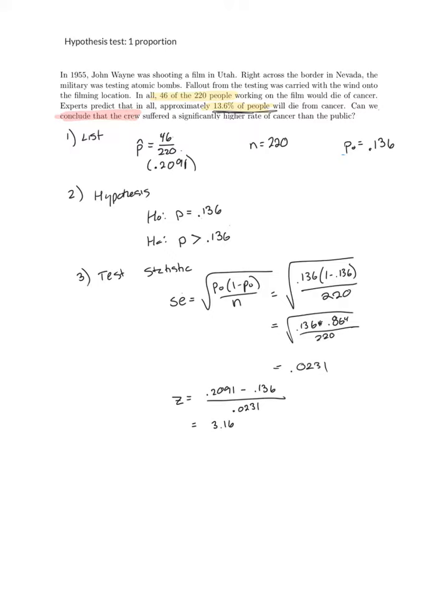We went ahead in the beginning and made our list. We listed our hypothesis, having a greater than symbol because we want to show that the crew suffered a significantly higher rate of cancer.